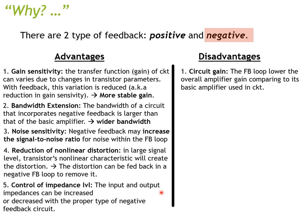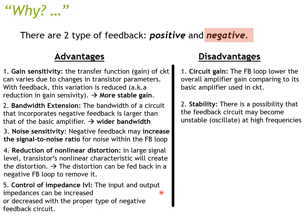Moving to the disadvantages, we only have a couple. The first is reduced circuit gain — when you add a feedback loop to a basic amplifier, the overall amplifier gain will be lower, so you have to use some tricks to bring that gain up to what you want. The second disadvantage is stability. While feedback stabilizes gain, there is a possibility that the feedback circuit can become unstable or oscillate at high frequency — think about what happens when you point a microphone toward a speaker.